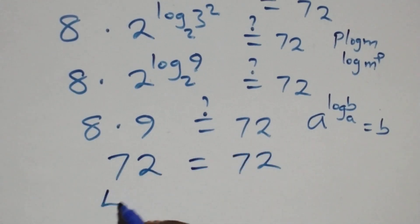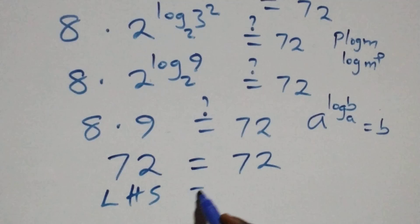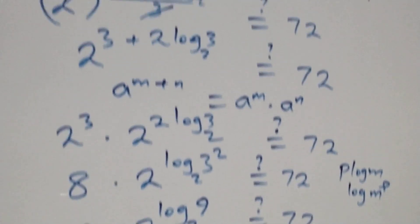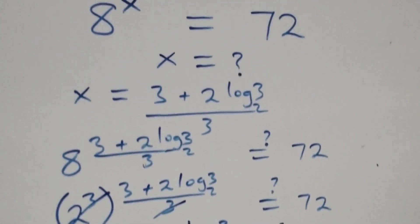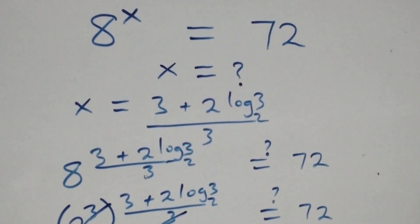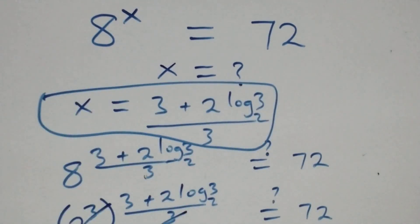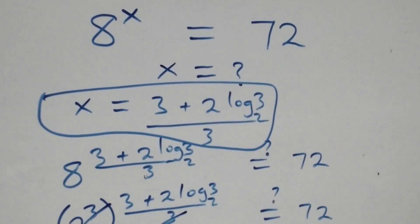Therefore we conclude that x equals (3 plus 2 log₂3) all over 3 satisfies the given problem. Thank you for watching — don't forget to subscribe for more videos, turn on the notification bell, share this video, give it a thumbs up, put your comments, and join our membership package. See you next class, bye for now.